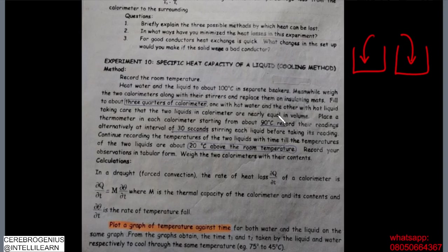They heat both calorimeters to a temperature of 90 degrees Celsius. After they start cooling, the temperature is measured at 30-second intervals. We record the temperature of the two liquids with time until the two liquids reach a temperature of 20 degrees Celsius above the room temperature — that's why it is necessary to record the room temperature.